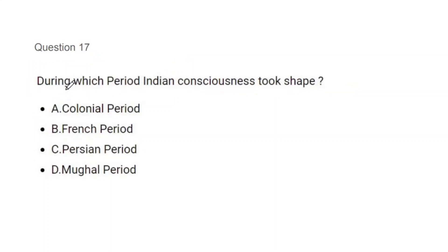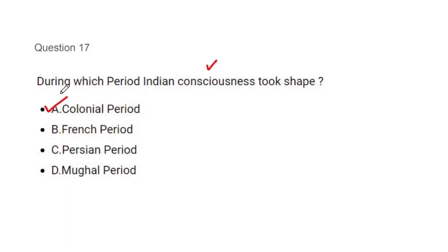Question 17: During which period did Indian consciousness take shape — the feeling that yes, we are one nation, or what you can call nationalism? Options: colonial period, French period, Persian period, Mughal period. The correct answer is A, that is colonial period. It is obvious — when the British were ruling over us, that is when the feeling of Indian consciousness arose in us.